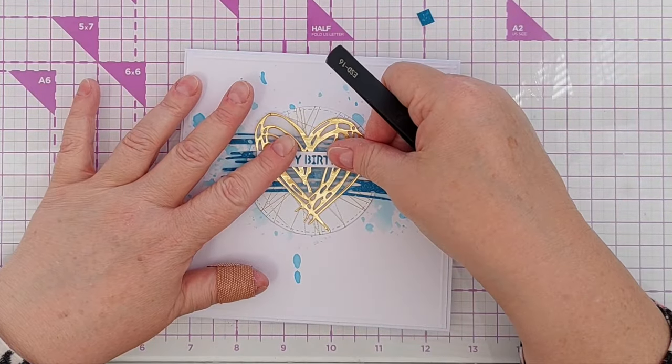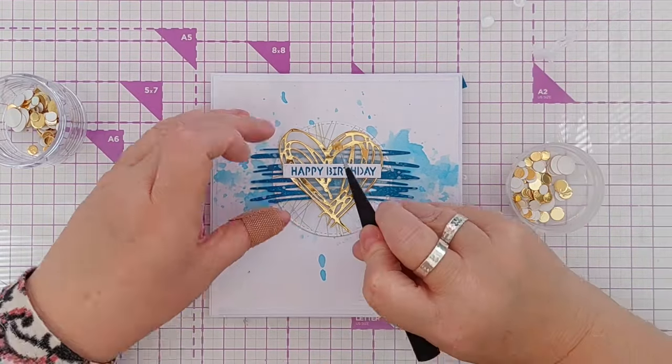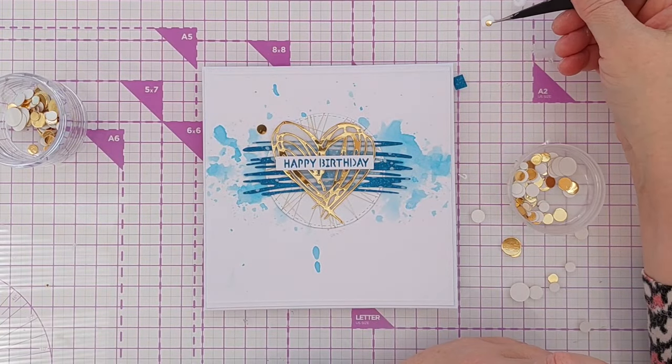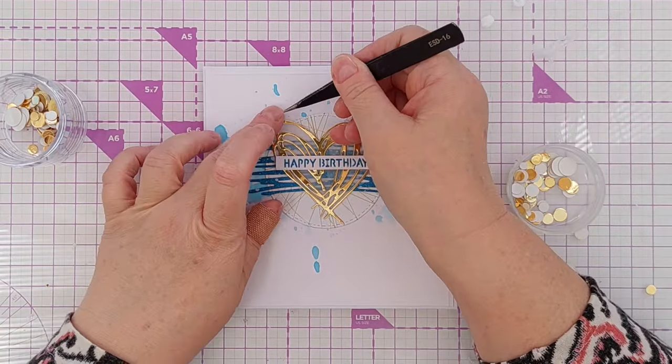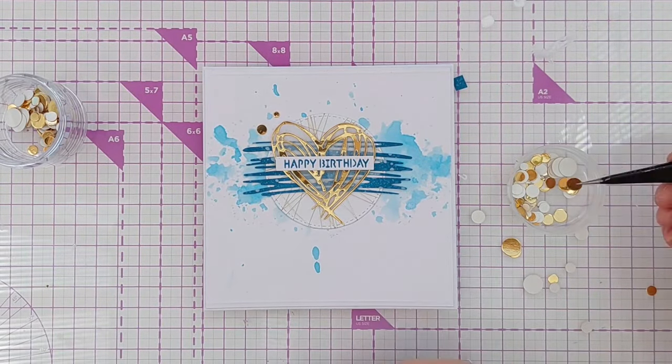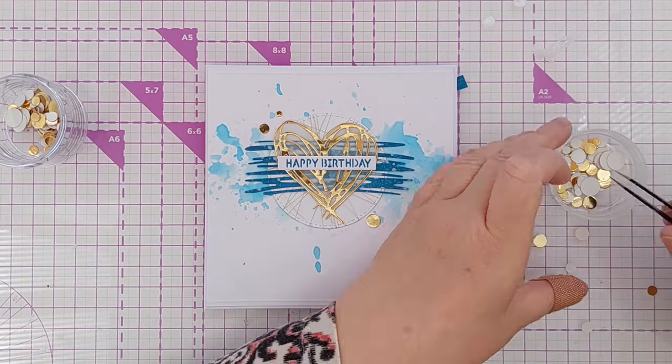As a finishing touch, I added some small gold foiled cardstock circles that I cut with various dies. I've upgraded my tiny circle storage from a small pot to a larger pot because I had a bit of a die cutting session the other night and cut lots and lots of circles, so I've got lots to choose from when I need them.